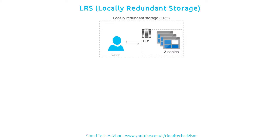Let me show you the types of redundancy for Azure storage accounts. The first one is Locally Redundant Storage. This means that your data is replicated synchronously in three copies within a single facility in a single region — in other words, three disks on three different racks in the same data center. Locally Redundant Storage protects your data against several hardware failures, but not against the failure of the facility itself.